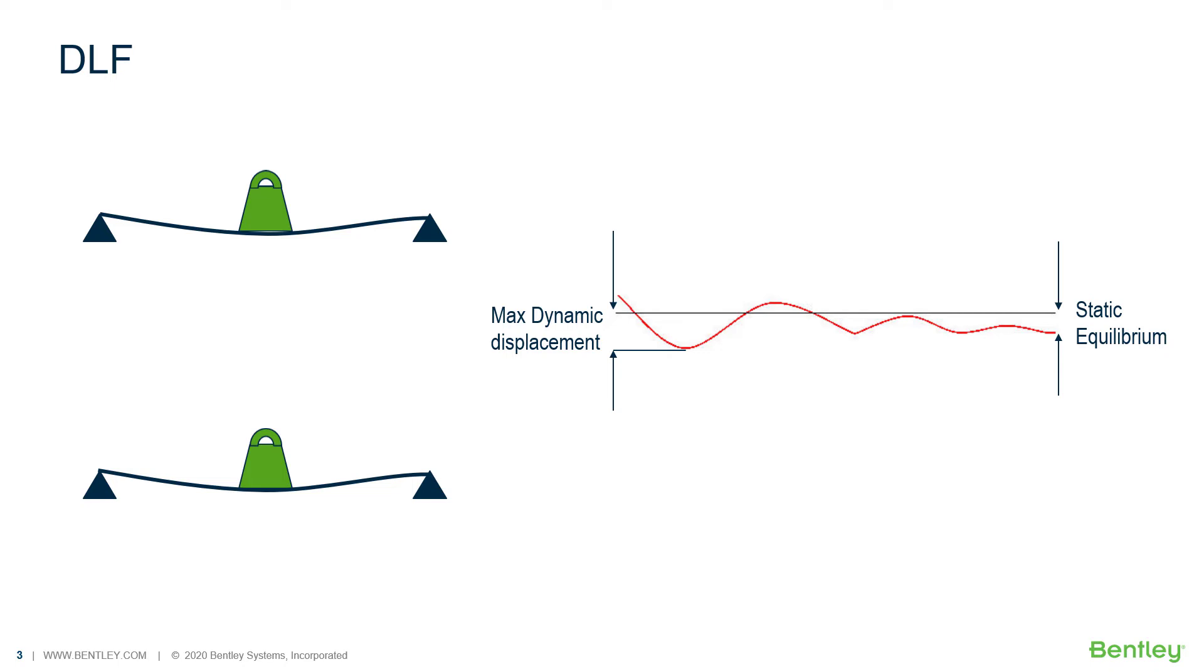The magnitude of the DLF will range between one and two, and it's dependent on the time history of the load and the natural frequency of the structure, and this is only true for instantaneously applied loads, so it's a maximum conservative value. In the ASME codes, there is a static equivalent approach that simulates dynamic events by taking the static load and multiplying it by the DLF.